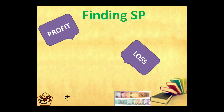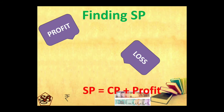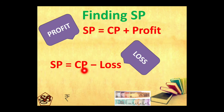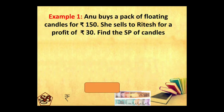Finding selling price. There are two formulae to find selling price: when we experience profit, then the selling price is cost price plus profit. And when there is a loss, then selling price is cost price minus loss. Let's apply these formulas in some examples and understand it better.